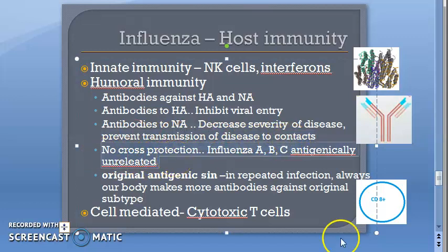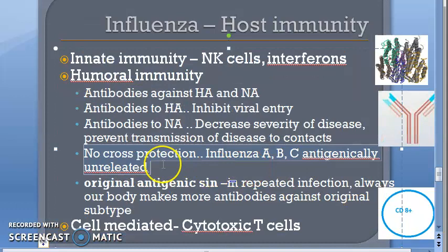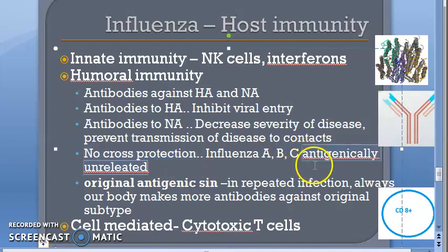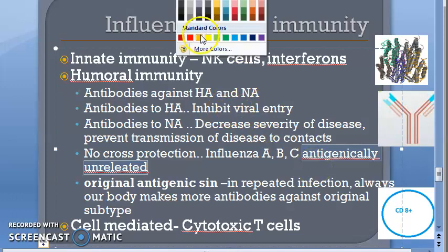There is no cross-protection between influenza types: antibodies made against influenza A will not protect against influenza B. Influenza A, B, and C are antigenically unrelated, which is disadvantageous for the host.